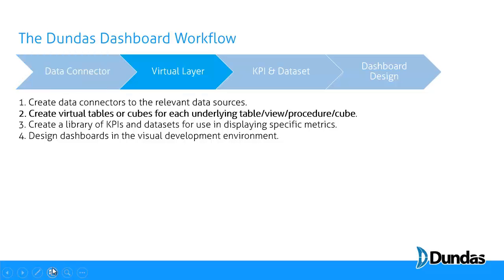The next step is to create a virtual layer — a set of virtual tables and cubes for each underlying table, view, procedure, and cube. This is a necessary step. This is an abstraction layer between your data and your KPIs. This is your chance to start narrowing down your data source to only what's relevant to the rest of the development process.